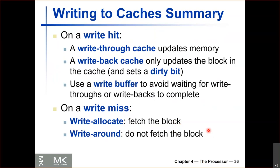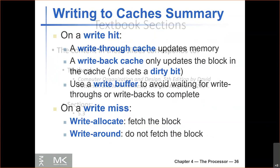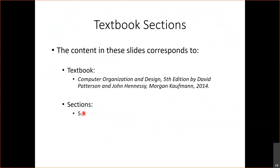To summarize: on a write hit, a write-through cache updates memory immediately; a write-back cache only updates the block and sets a dirty bit, updating memory on eviction. Both can use a write buffer. On a write-miss, write-allocate fetches the block to cache before writing, and write-around writes directly to memory. This material is covered in section 5.3 of the textbook. That's all for today — see you next time.